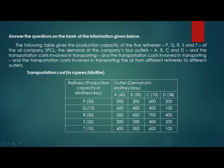We will start with D. D has a demand of 20 kilolitres per day, and the lowest cost is incurred when T's production is supplied to D. So T supplies 10 kilolitres and fulfills half of D's demand at 100 rupees per kilolitre. After that, 10 kilolitres is still left, and Q supplies to D at the same price of 100 rupees per kilolitre. So the demand of D, that is 20 kilolitres, is met by Q and T.